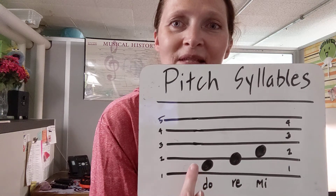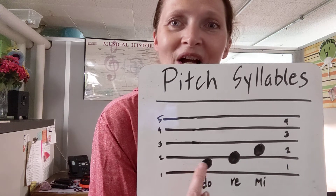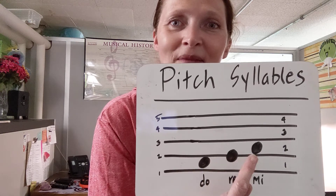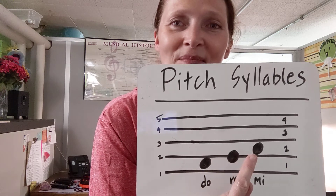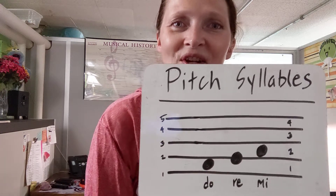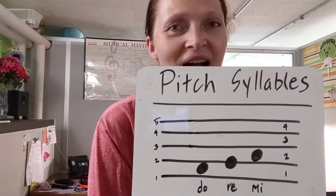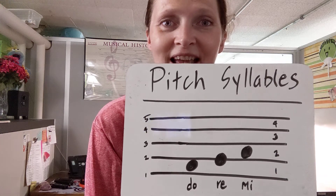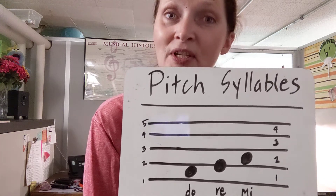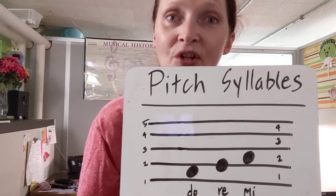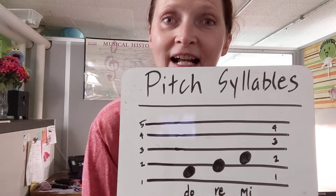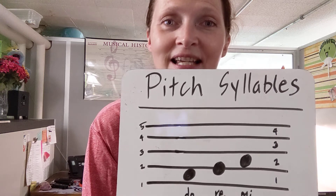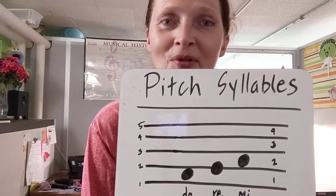Do is on the first space. Re is on the second line. Mi is on the third space. You're going to have a good time reading your pitch syllables today, and when you're done, look below the slides. There's an assignment — assignment number two.